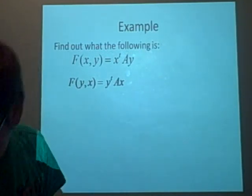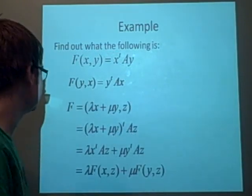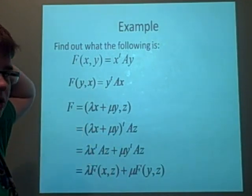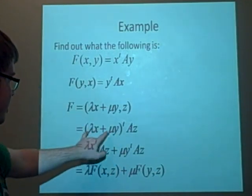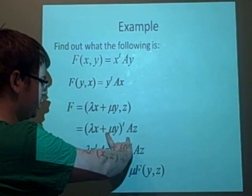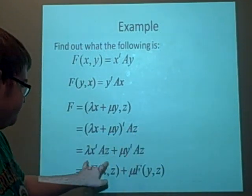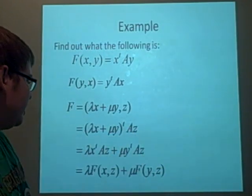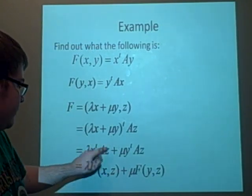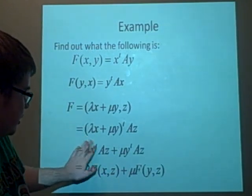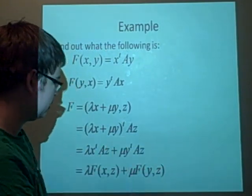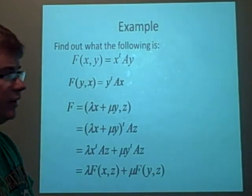The next one we'll try, we'll try the lambda x plus mu y transposed times az, which we've done here. And as we've separated it, we can actually see that we've got lambda f of xz plus mu f of yz. So we can say that it is actually bilinear.